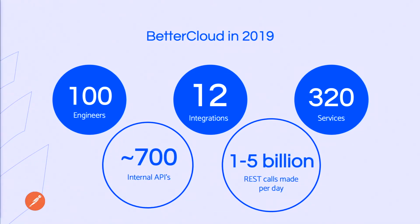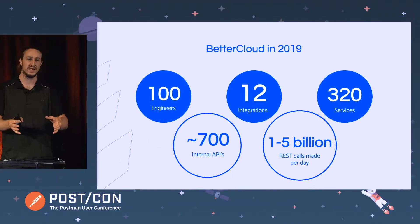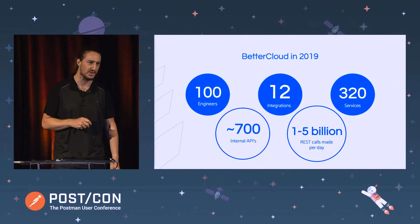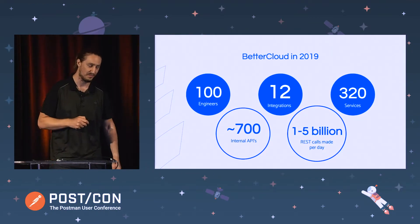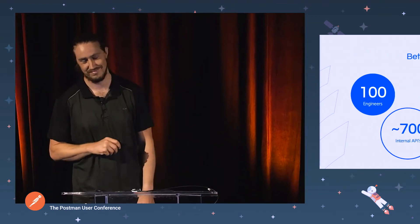Even within a single organization, a previous talk noted that everybody does everything differently. Even in Slack, there are five different ways to paginate. And even at Google, there are probably about 100 different APIs to integrate with.